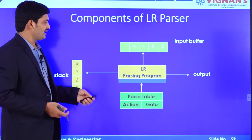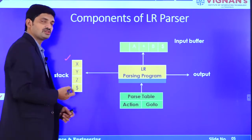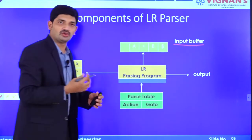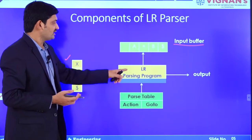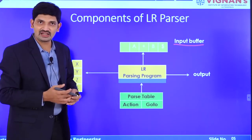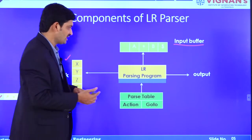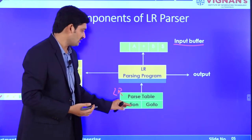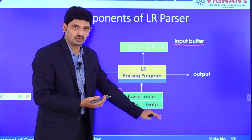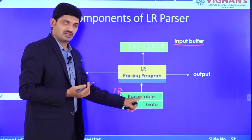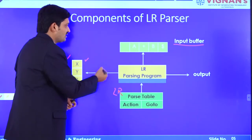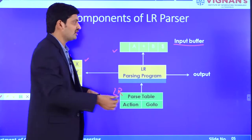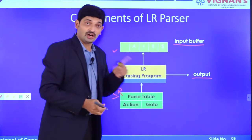The components of an LR parser include a stack as the data structure used in the parsing process, and an input buffer where the input string is loaded. The LR parsing program uses the LR parse table, which consists of two parts: the action table and the goto table. Using the stack, input buffer, and parse table, the LR parsing program performs the parsing operation and generates the output, which is a parse tree.